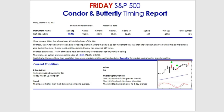Since January of 2000, we've had about 4,538 daily closes of the S&P 500. Of those, almost two-thirds — 65.6% — have been favorable bars for selling premium in a delta-neutral fashion, condors and butterflies, where the actual 21-bar subsequent movement was less than what was being implied by the option prices.